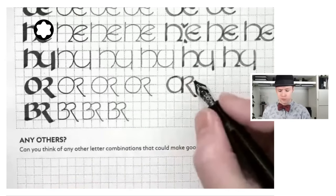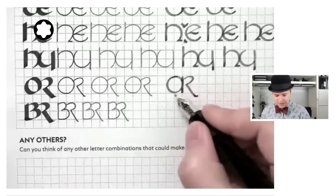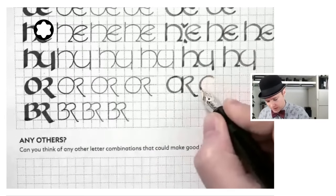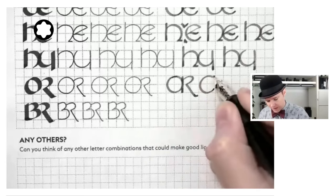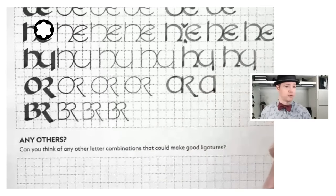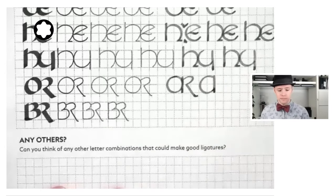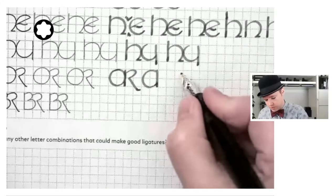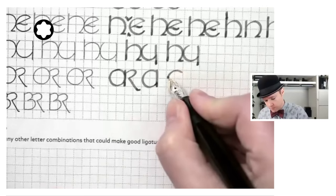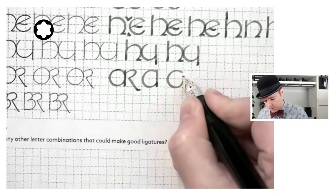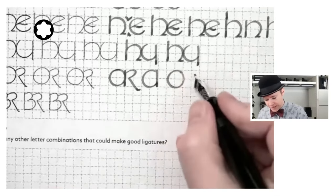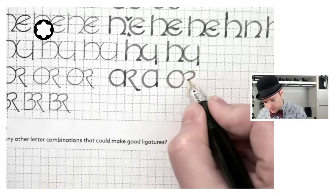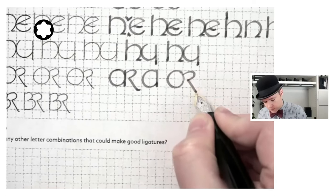Rather than have that down stroke there, because what that can kind of create the image of is, I didn't realize this before, but it almost looks like the Roman variant of a lowercase A, which we don't necessarily want. So what we can do is do our circular form, and then from there, we just connect the R straight to the O like so.